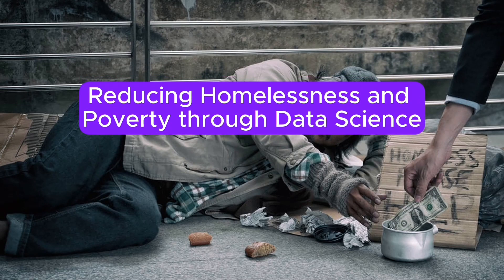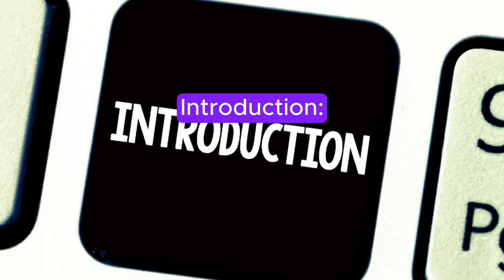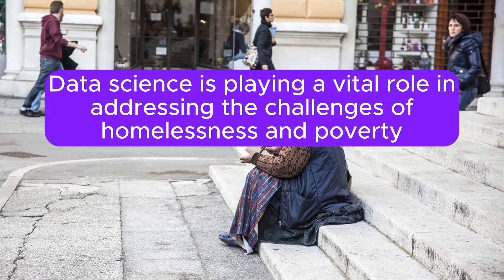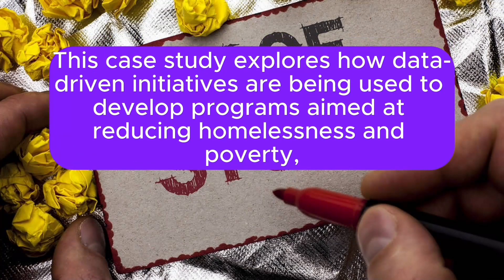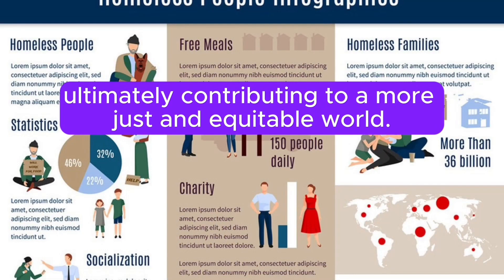Reducing Homelessness and Poverty Through Data Science. Data science is playing a vital role in addressing the challenges of homelessness and poverty by harnessing data on income, housing costs, and social determinants of health. This case study explores how data-driven initiatives are being used to develop programs aimed at reducing homelessness and poverty, ultimately contributing to a more just and equitable world.